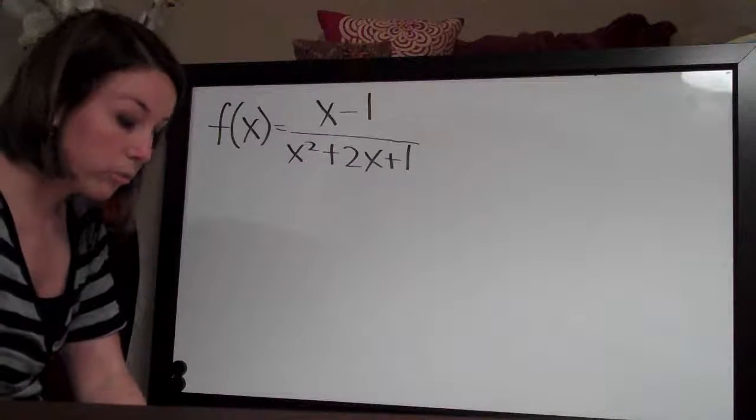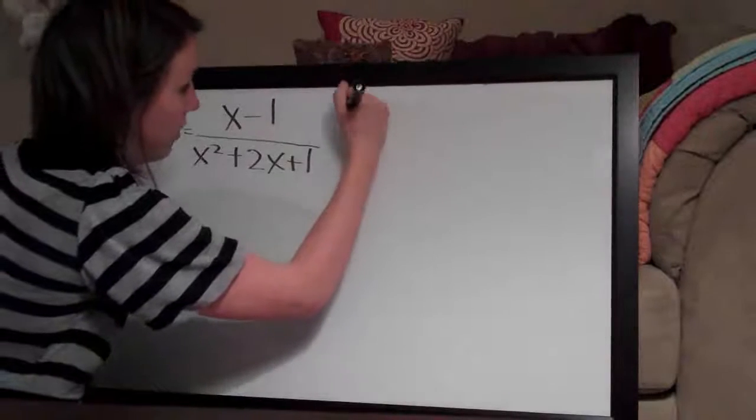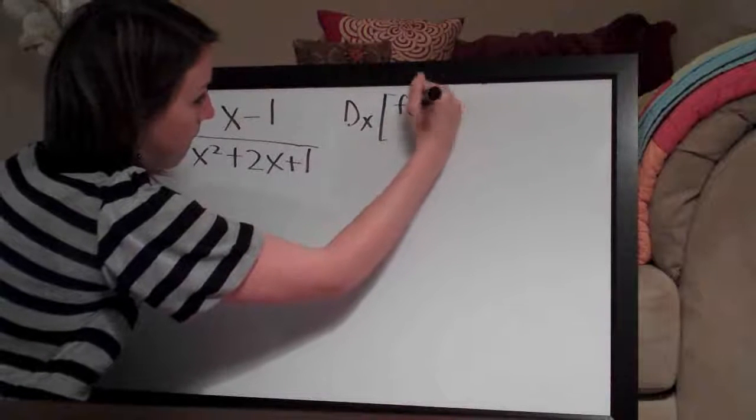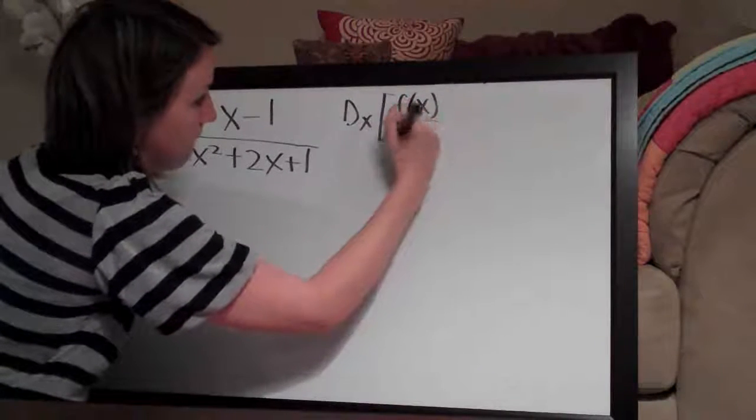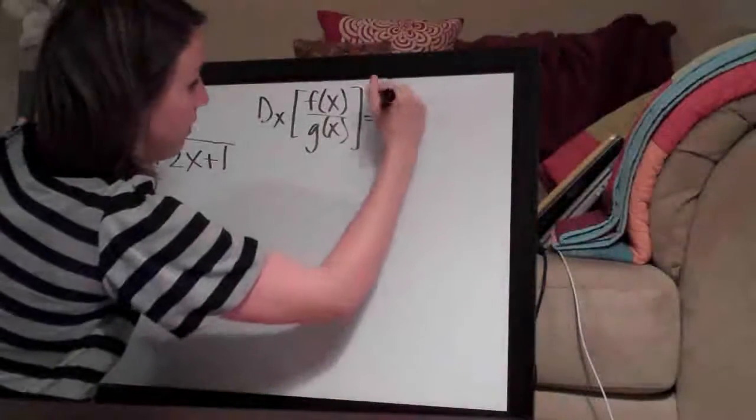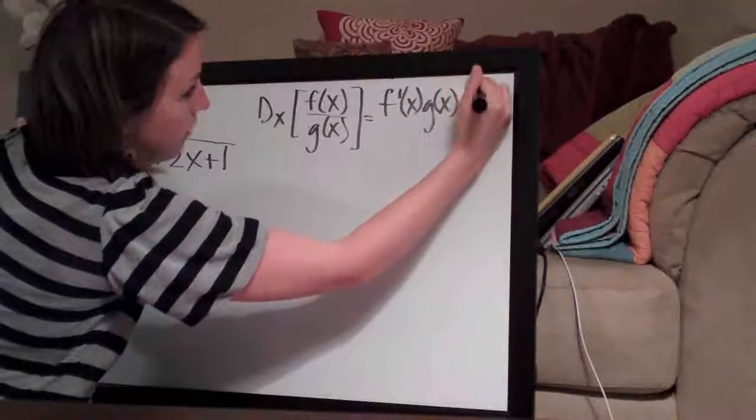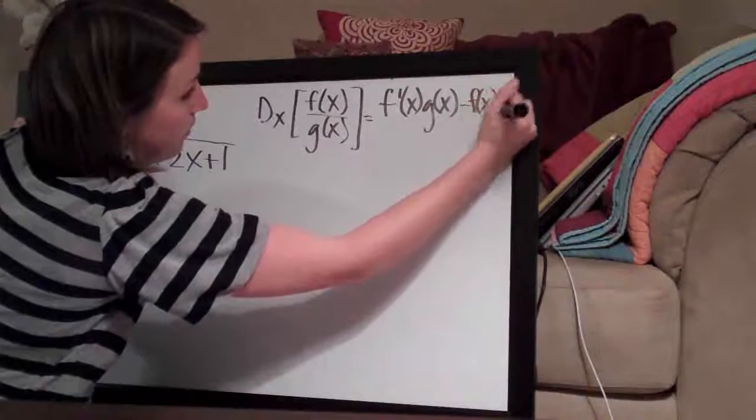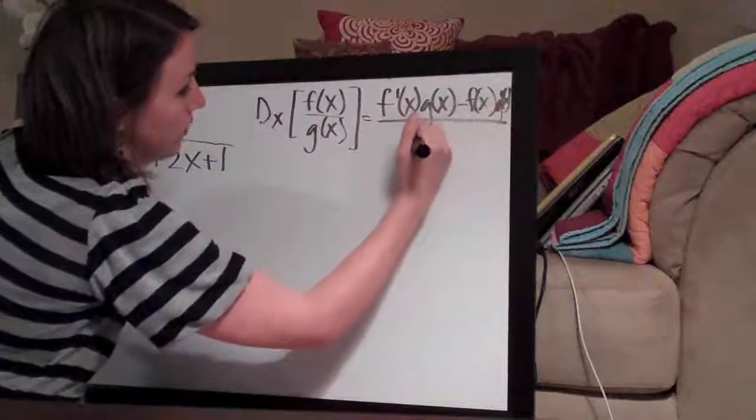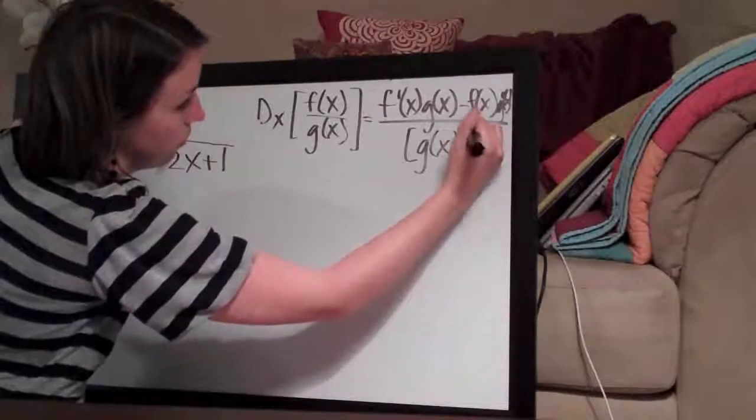And we're going to be using quotient rule, which let's just go ahead and write it somewhat small over here. Quotient rule is the following: f'(x) times g(x) minus f(x) times g'(x), over g(x) squared.